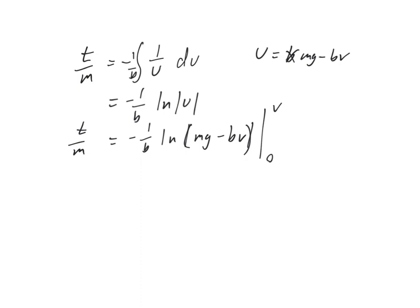Usually, when we plug in the 0 limit, it gives us something trivial and it goes away, but this time, that's not the case. So, we do need to be careful with that 0 limit. So, we have a negative 1 over b, and it's a natural log of plugging in the first limit here. We're going to go mg minus bv, and that's minus the natural log of plugging in the second limit. We get mg minus 0, which is mg.